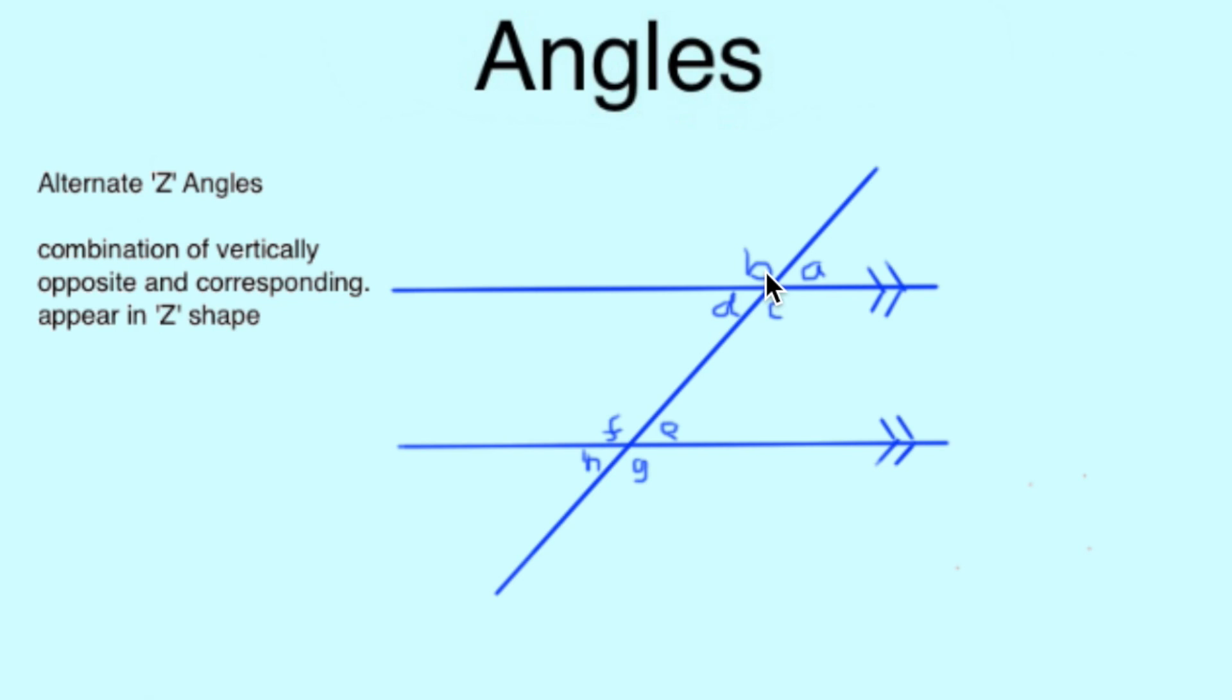Alternate angles are equal as we know that vertically opposite angles are the same, then so must their corresponding angles be. For example, angles C and F. Alternate angles are often called Z angles because of the way they appear on a Z shape.